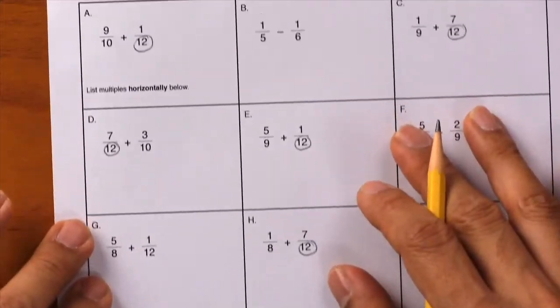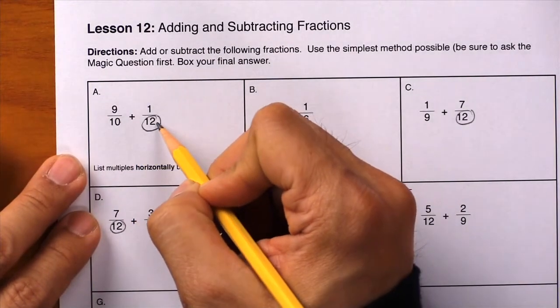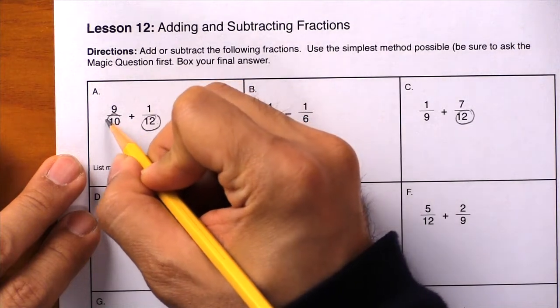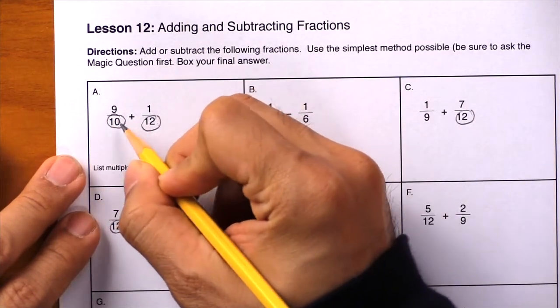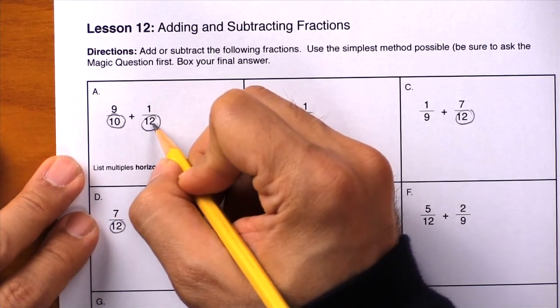Here we have 9/10 plus 1/12, and tenths and twelfths are not the same thing, so we can't add them together. These fractions do not have the same denominator.